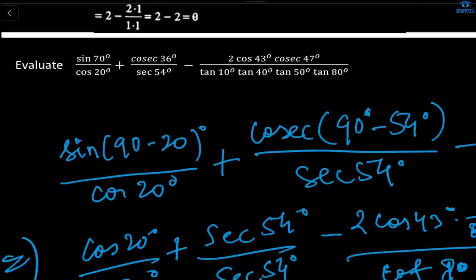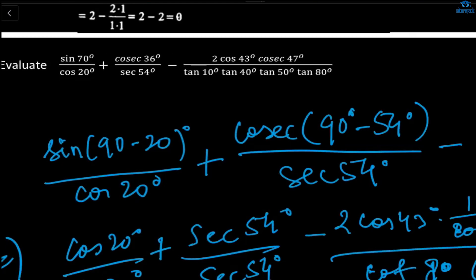Sine and cos are complementary, so we change one of them. Changing the numerator: sine 70° equals sine(90 minus 20°) equals cos 20°. So cos 20°/cos 20° equals 1 — the first term becomes 1. Second term: cosec complements sec, so cosec 36° can be written as sec 54°, since cosec(90 minus 54°) equals sec 54°. So cosec 36° · sec 54° becomes sec 54° · sec 54°, which cancels to give 1. So 1 plus 1 equals 2 so far.